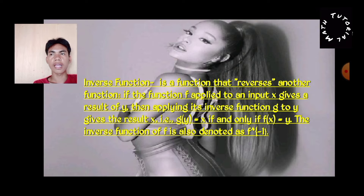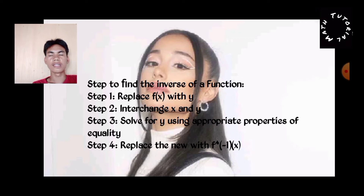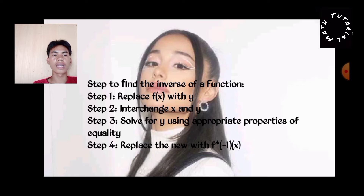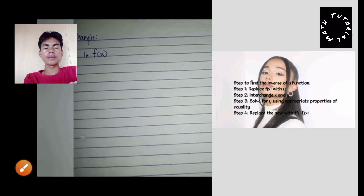The inverse function of f is also denoted as f inverse, or f to the negative one. These are the basic steps to find the inverse function. The first step is you need to replace f(x) with y. The second step is interchange x and y. Step three is solve for x using appropriate properties of equality. The last step is replace the result with f inverse of x.